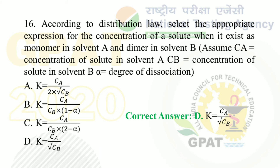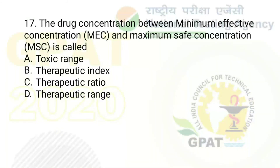The question: the drug concentration between minimum effective concentration (MEC) and maximum safe concentration (MSC) is called. Option A: toxic range. Option B: therapeutic index. Option C: therapeutic ratio. Option D: therapeutic range. The right answer is option D — therapeutic range.